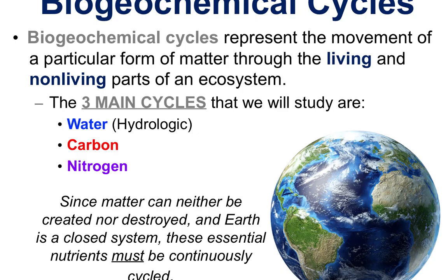There are really three main cycles in biology that we want to study: the hydraulic cycle, which you might know as the water cycle, the carbon cycle, and the nitrogen cycle. These cycles represent how the movement of particles and matter move through living systems and even non-living systems — these living systems make up ecosystems. And since matter cannot be created nor destroyed, Earth is a closed system, so these essential nutrients must continually be cycled throughout the planet.